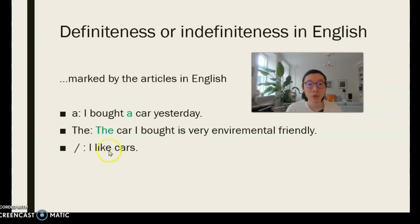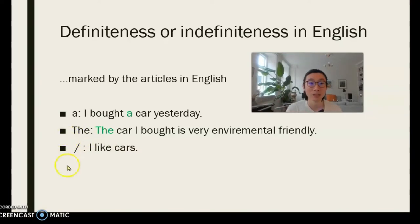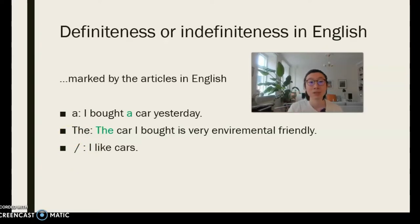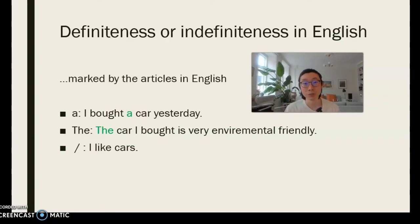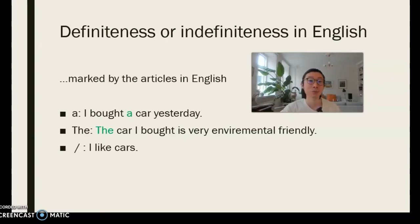The third article is the actually invisible article, because it's still important. Sometimes we don't use the article and it's actually also a part of the grammar. For example, 'I like cars.' In this case you wouldn't say 'I like the cars' because you are aiming to say the category instead of some specific bunch of cars.